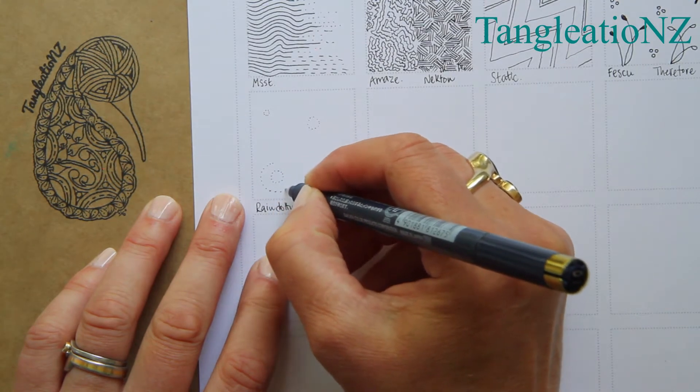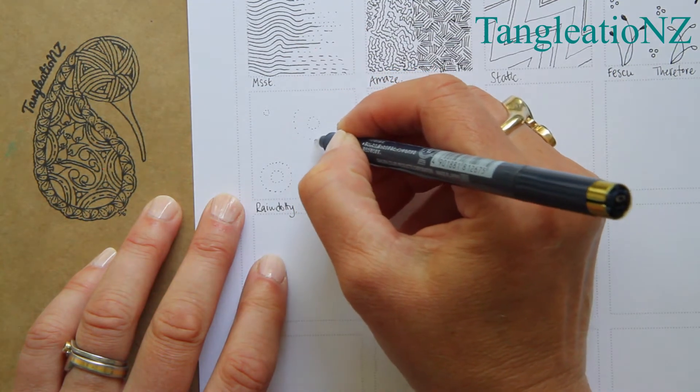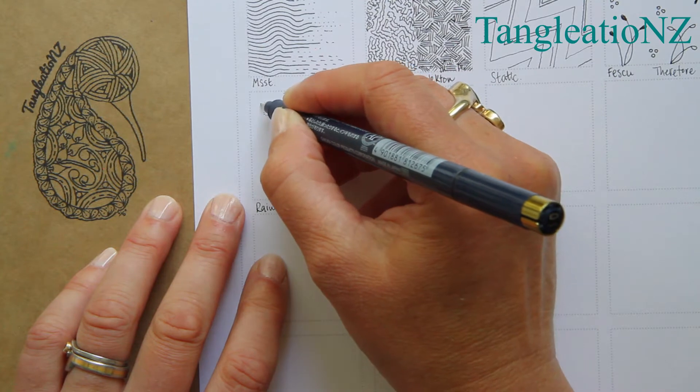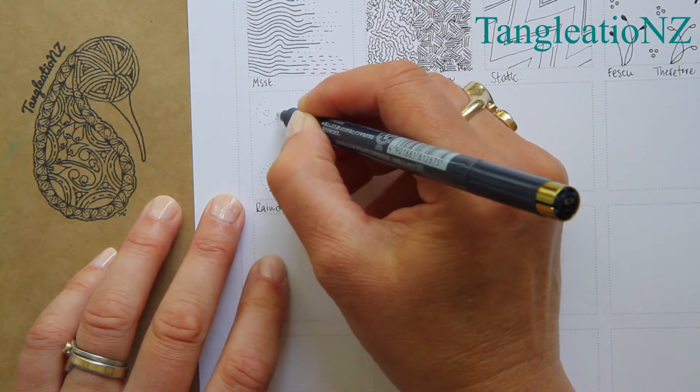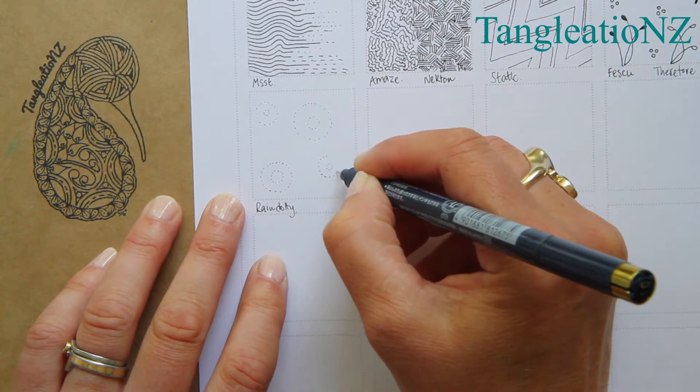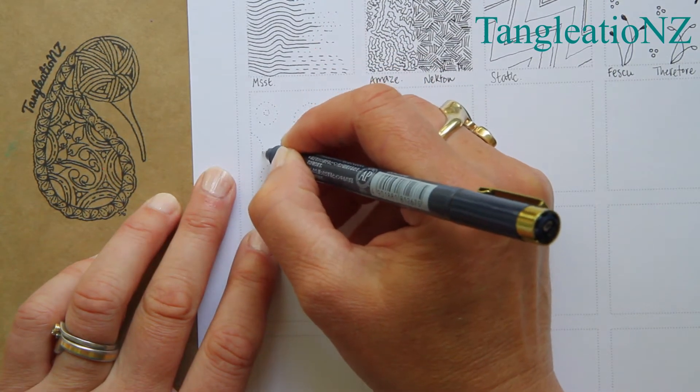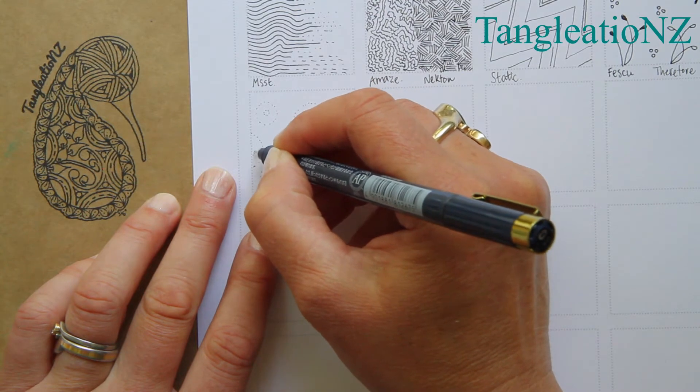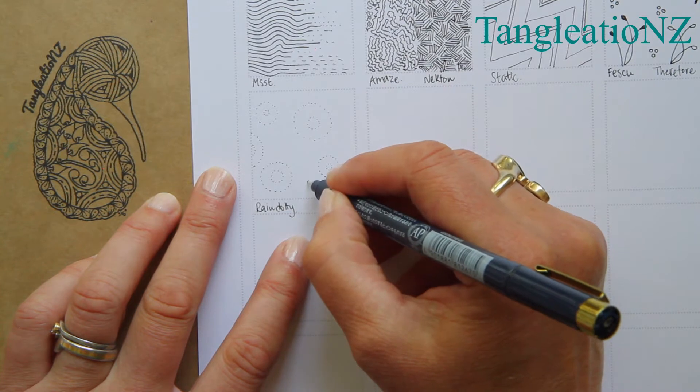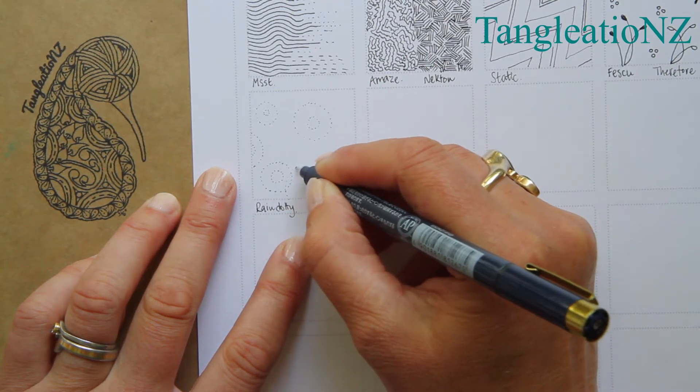As I begin to fill the section, you can see sometimes I can change the scale, so I might have some smaller ones and some bigger ones. Where a dot-based tangle is really useful is you can have them just peeping out, and you can also have them overlap.